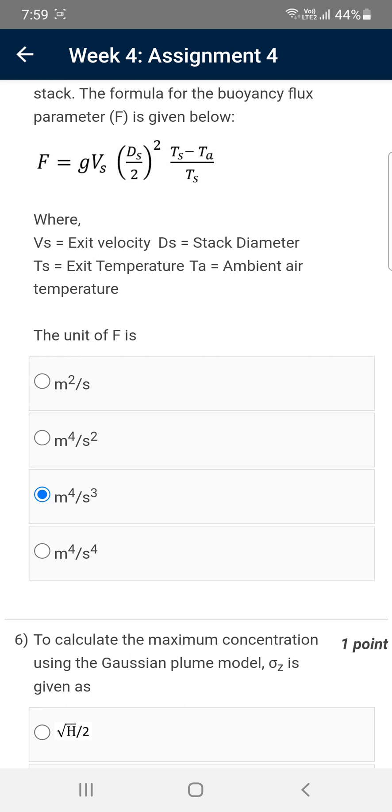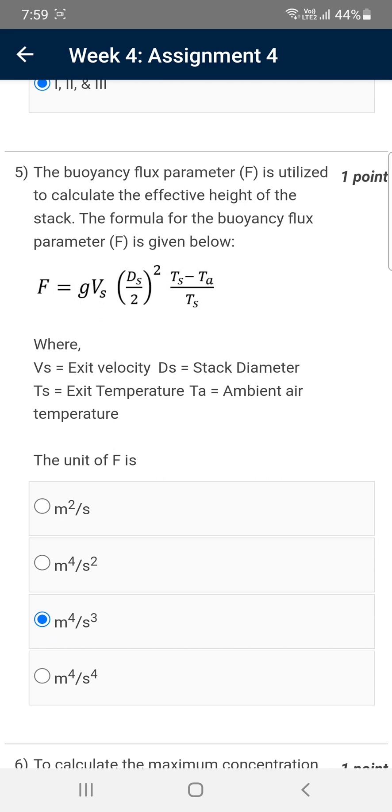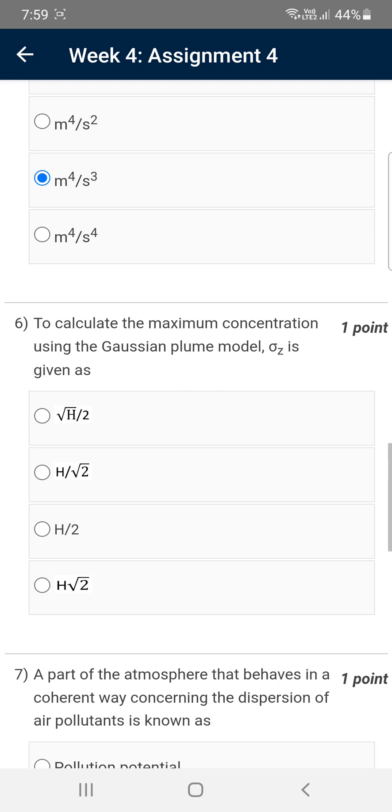Moving on to the sixth question: To calculate the maximum concentration using the Gaussian plume model, the sigma Z is given as... The answer for the sixth question is the second option, H by root two.